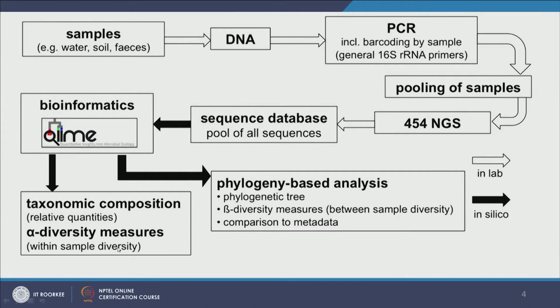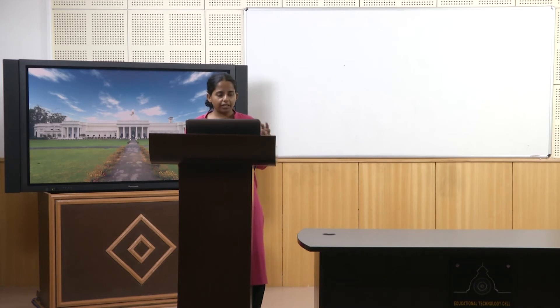Using the taxonomic composition, I can do two kinds of analysis. The first is alpha diversity — how diverse a sample is within itself. For example, if I sequence 100 reads from a water sample and get 30 unique sequences, there are 30 species present. But if I sequence 100 reads from fecal matter and get 85 unique sequences, I can say the alpha diversity of fecal matter is higher than that of water.